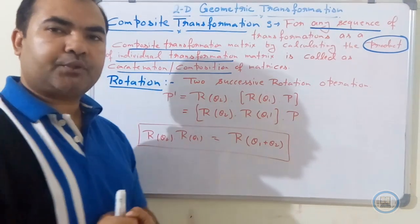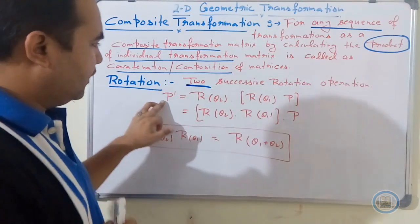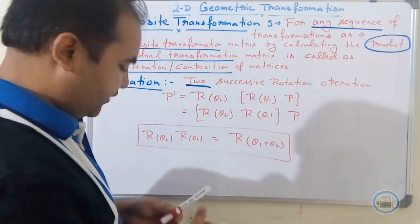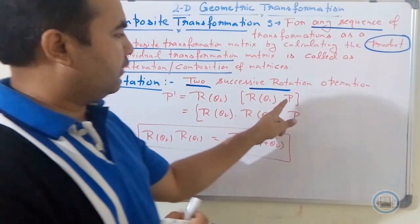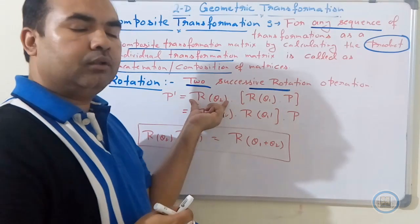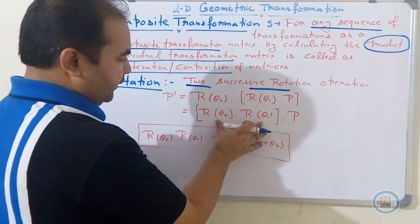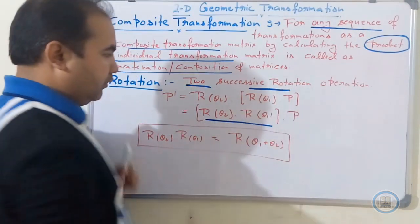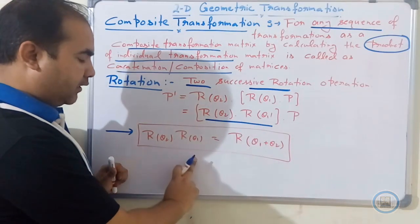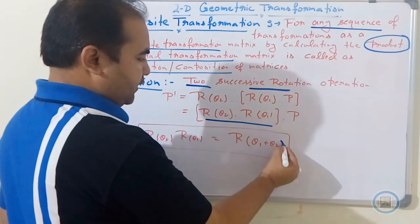For the rotation transformation, if we want to represent the composite operation for two or more successive rotations, the matrix operation is R(theta2) multiplied by R(theta1) multiplied by P. Because matrix operations follow the associative law, we can multiply R(theta2) and R(theta1) together first, and we can verify that the result gives R(theta1 plus theta2).